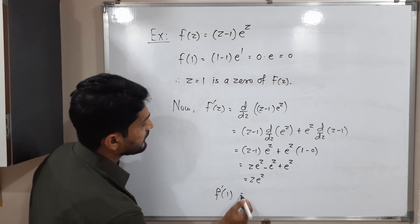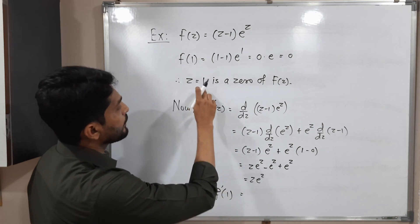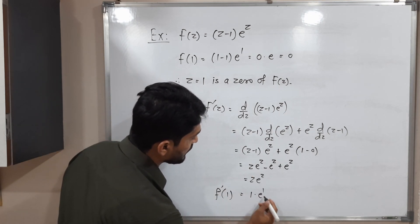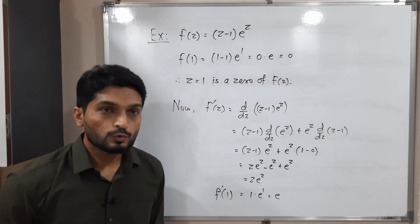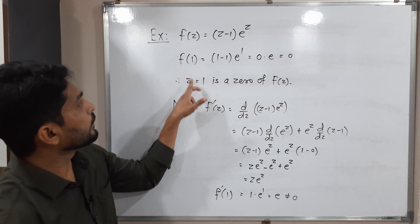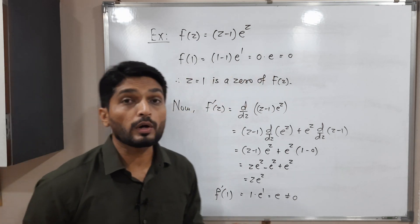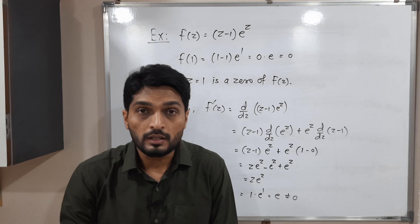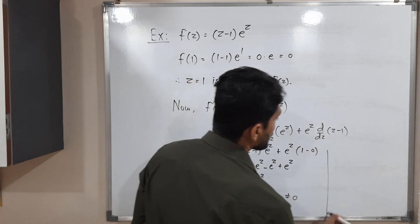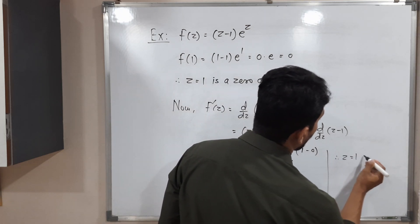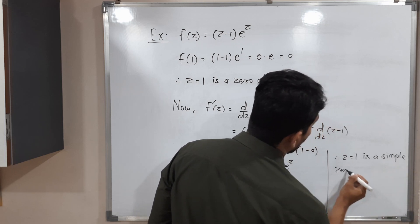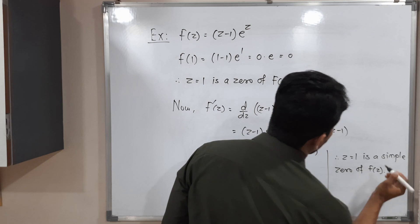Now I put z equal to 1 into f-dash of z equals z e raised to z. That gives 1 into e raised to 1, which is e itself. Obviously e is not equal to 0. So f of 1 is 0 but f-dash of 1 is not equal to 0. That means z equal to 1 is a zero of order 1, or a simple zero. Therefore, z equal to 1 is a simple zero of f of z.